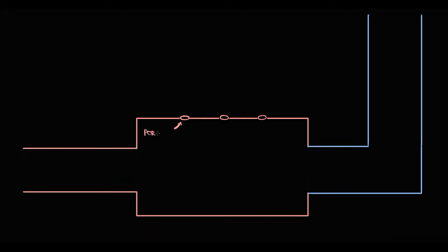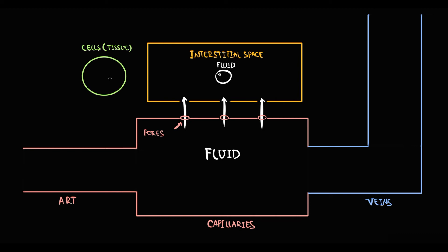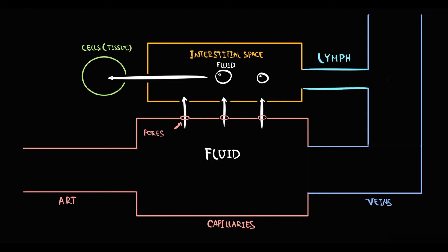The cardiovascular system is a closed system where fluid exchange occurs in capillaries, because capillaries have pores. Arterial circulation delivers blood to capillaries, veins provide outflow of blood from capillaries, and through these pores fluid with nutrients can enter the interstitial space. Cells receive vital substances from the interstitium, but some fluid remains there. The lymphatic system then drains the excess fluid from the interstitial space into the venous system.